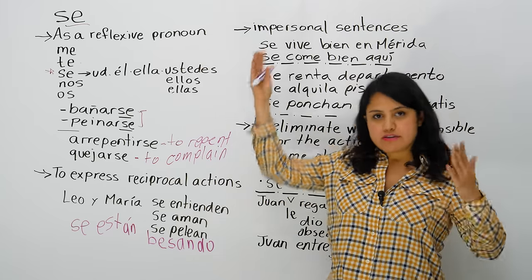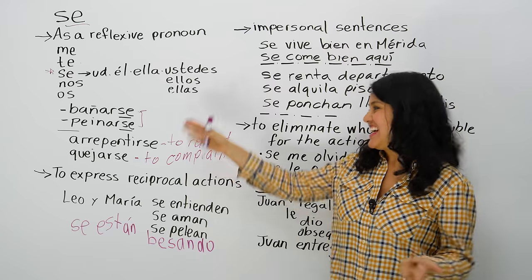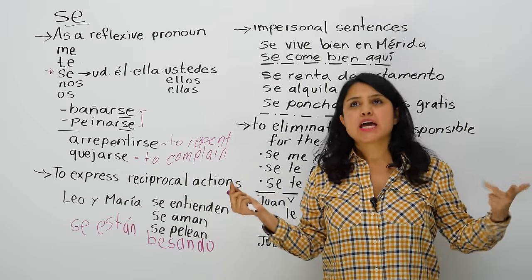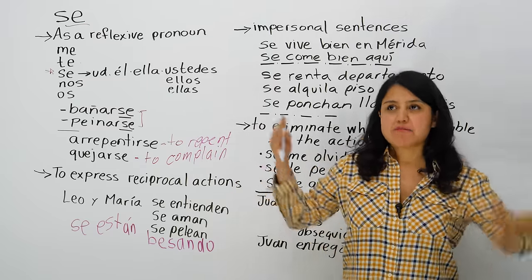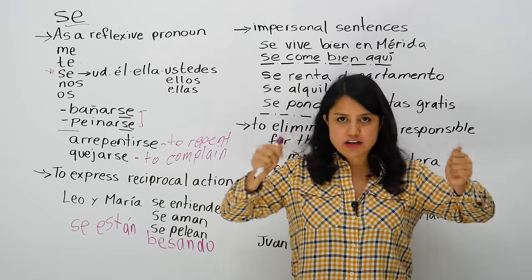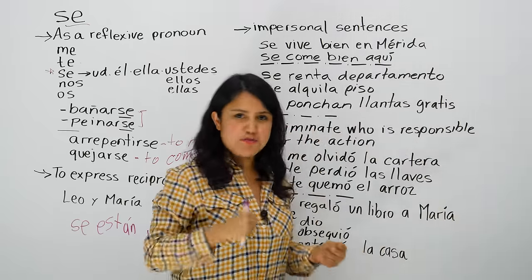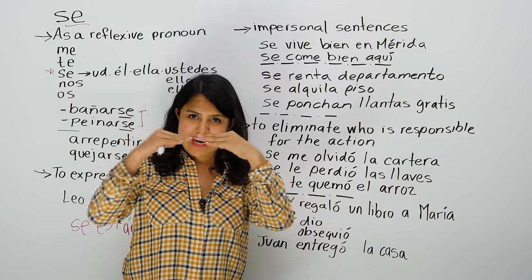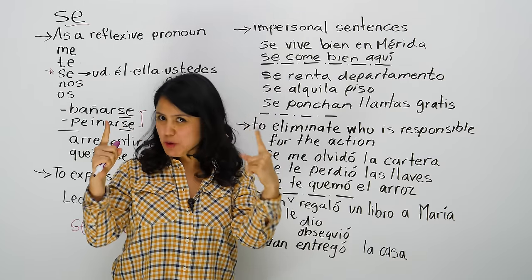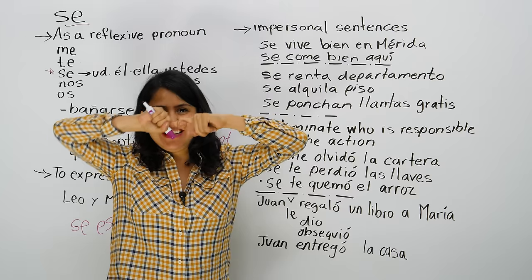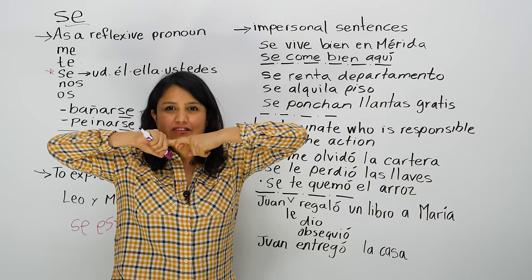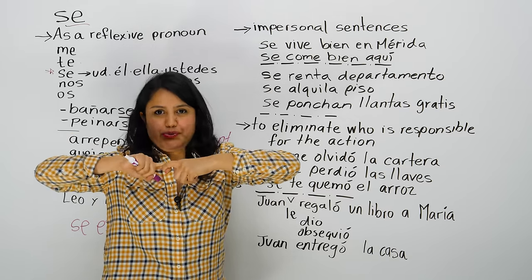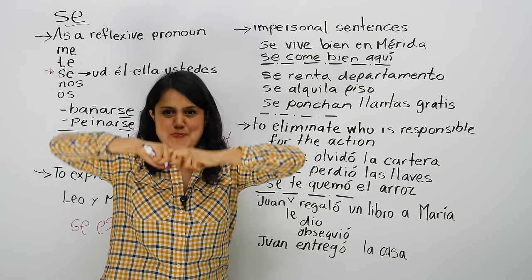So we have two uses already: one with reflexive pronouns — me, te, se, nos, os — and the other with reciprocity. Second is reciprocity: when two subjects, two people, do the same thing to each other. Their love is reciprocal, their hate is reciprocal — whatever is reciprocal.